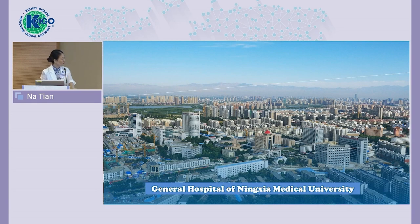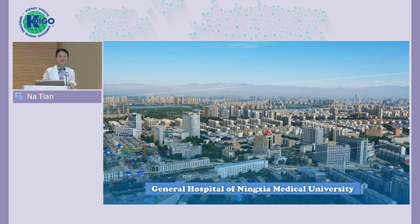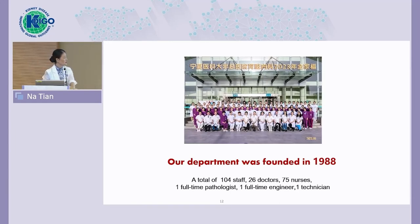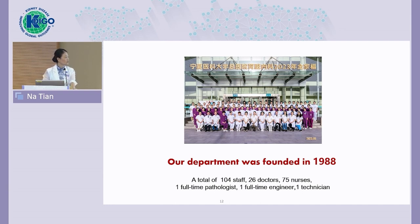This is our hospital — the General Hospital of Ningxia Medical University — which serves as the medical center for our province and the surrounding region. This is our nephrology department, founded in 1988. We now have a total of 104 staff, including 26 doctors and 75 nurses, one full-time nephrologist, and one full-time engineering technician.